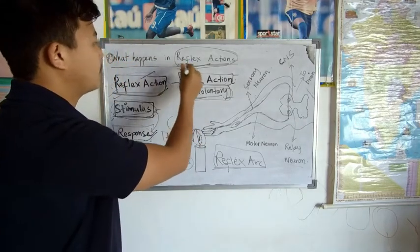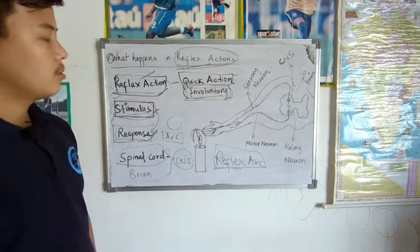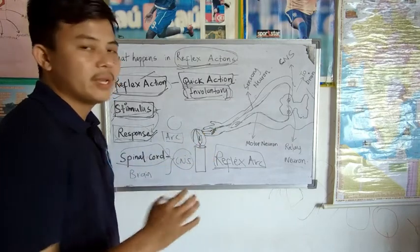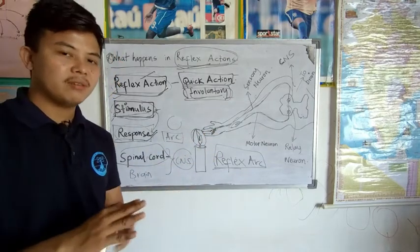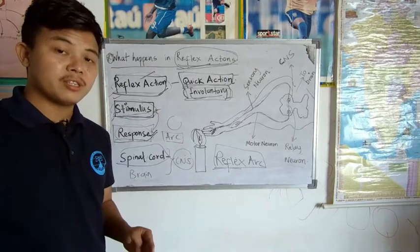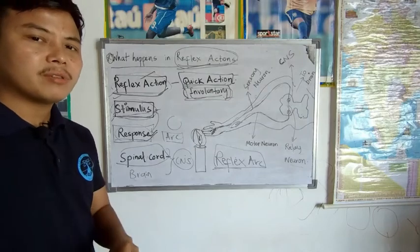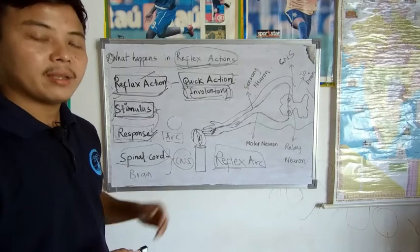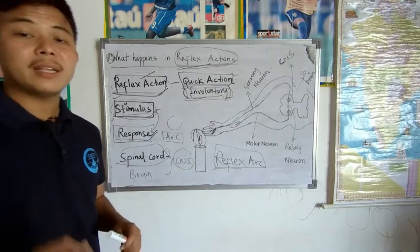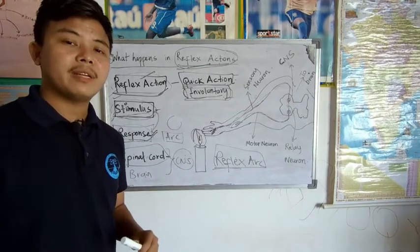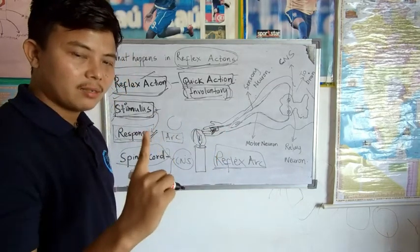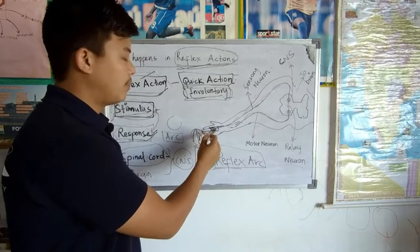Now, how do reflex actions happen? Whenever you touch a hot object like a candle, in your hand there will be a receptor. The entire nervous system is made up of a single unit called a neuron. Many neurons combine to form the nervous system. In one neuron there will be different types of receptors — in the eye an optical receptor, in the tongue a gustatory receptor, and in the hand a receptor within the neuron.